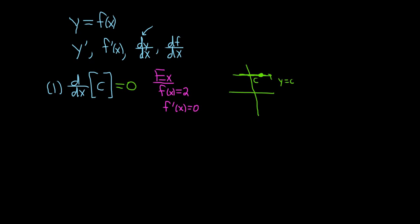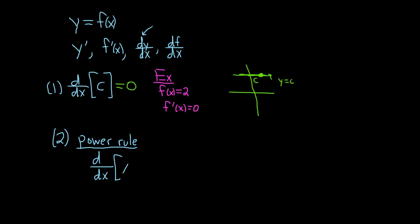The second formula is extremely important — it's called the Power Rule. The power rule says: if you take the derivative with respect to x of x to a power, x to the n, you put the n in the front and then subtract one from the exponent, giving you n times x to the n minus one.